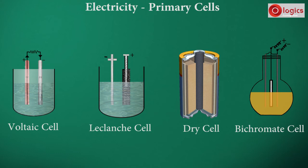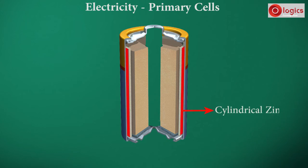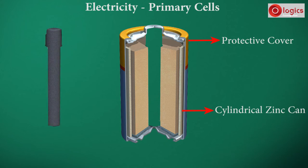There is no liquid in Leclanché dry cell. Now, let us see the structure of dry cell. A dry cell consists of a cylindrical zinc can, and this is the protective cover. A carbon rod with a brass cap is placed in a cylindrical zinc can.